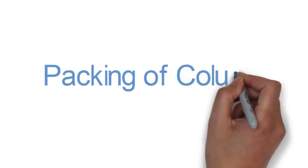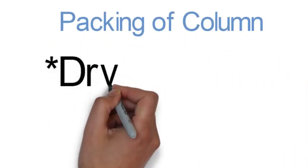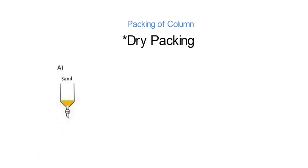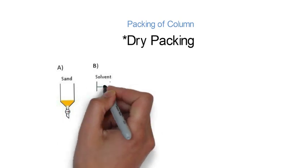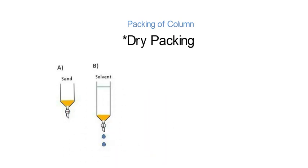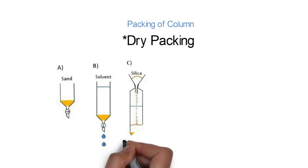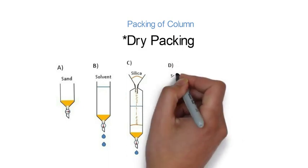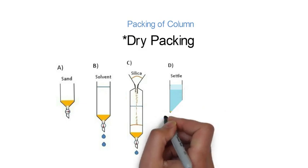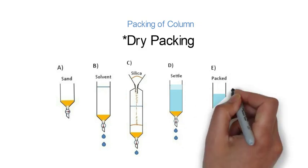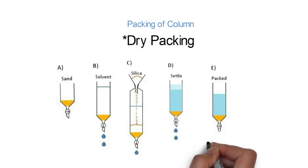After that, next component is column packing. Firstly, we will see dry packing. In dry packing, select a column and take a cotton plug or insert silica at the bottom. After that, add a solvent in the column and start the cock, so the solvent will drain out and air bubbles will come out. After that, take a funnel and add the silica in it. Let the solvent flow continue through the cock. Once silica has been added, let the column settle down after tapping the column. Then turn off the cock, and now you can see that clearly the column is ready for elution.